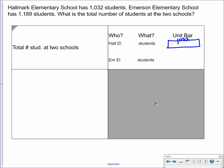And Emerson Elementary has 1,189. So if I do this, 1,189 students. That doesn't look right. We need to adjust Emerson's unit bar because it has more students than Hallmark. And right now, it's showing you that it's the same. So let's go ahead and extend it out just a little bit just to show that Emerson is actually bigger.